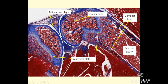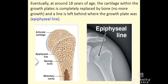Just to remind you of some other features: we've got the meniscus here within the knee joint, our synovial capsule, and the internal structure of the synovial capsule is the synovial membrane, which produces the synovial fluid. Here we've got the synovial space or synovial cavity — parts of the synovial joints from the last pre-class. Eventually, at around 18 years of age, the cartilage within the growth plates is completely replaced by bone, so there's no more growth and a line is left behind where the growth plate was — referred to as the epiphyseal line.